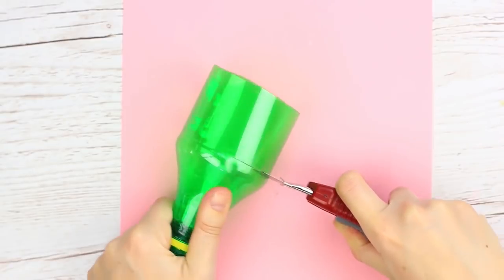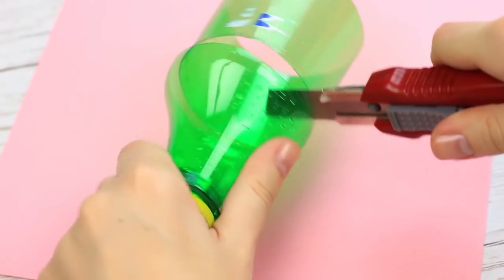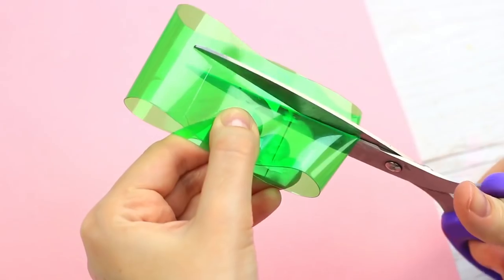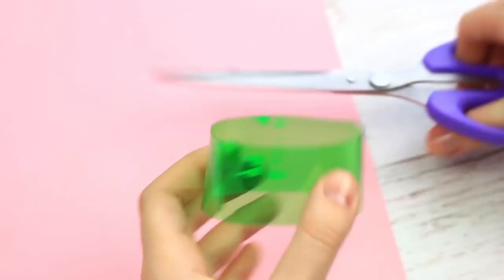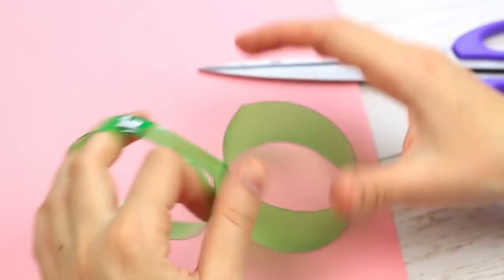Cut off the top. Trim with the scissors. We've got two bracelets of different widths.